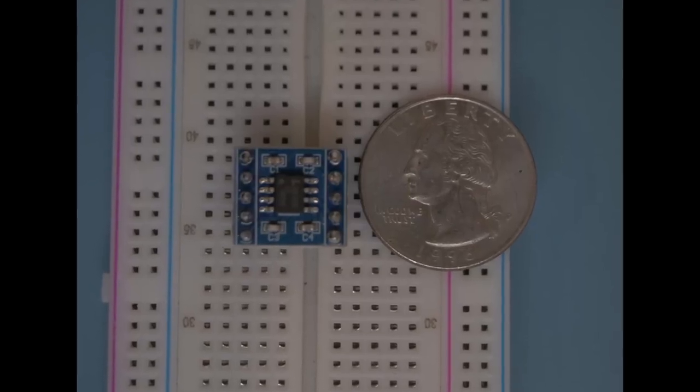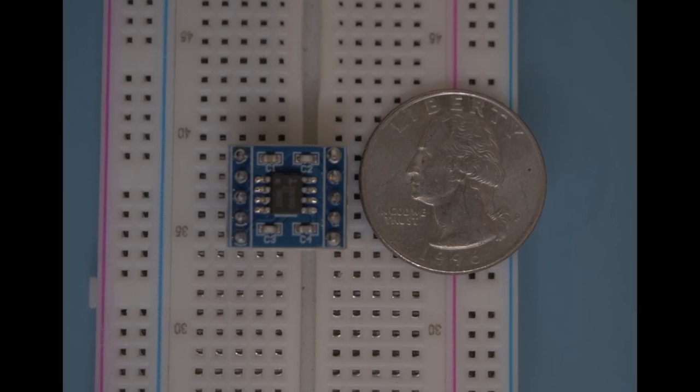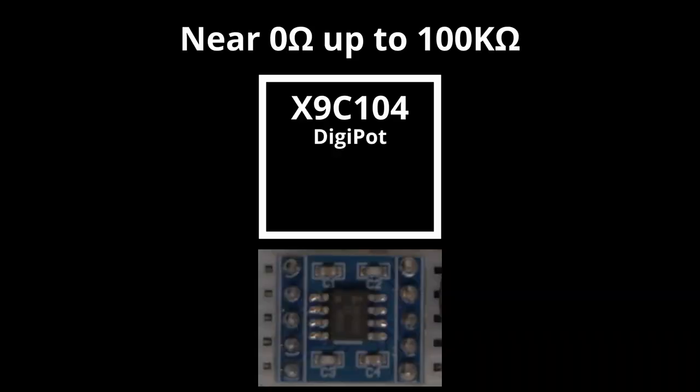With this new idea in mind, I went online and ordered this X9C104 digital potentiometer. The X9C104 can range between nearly 0 ohms up to 100 kilo ohms.